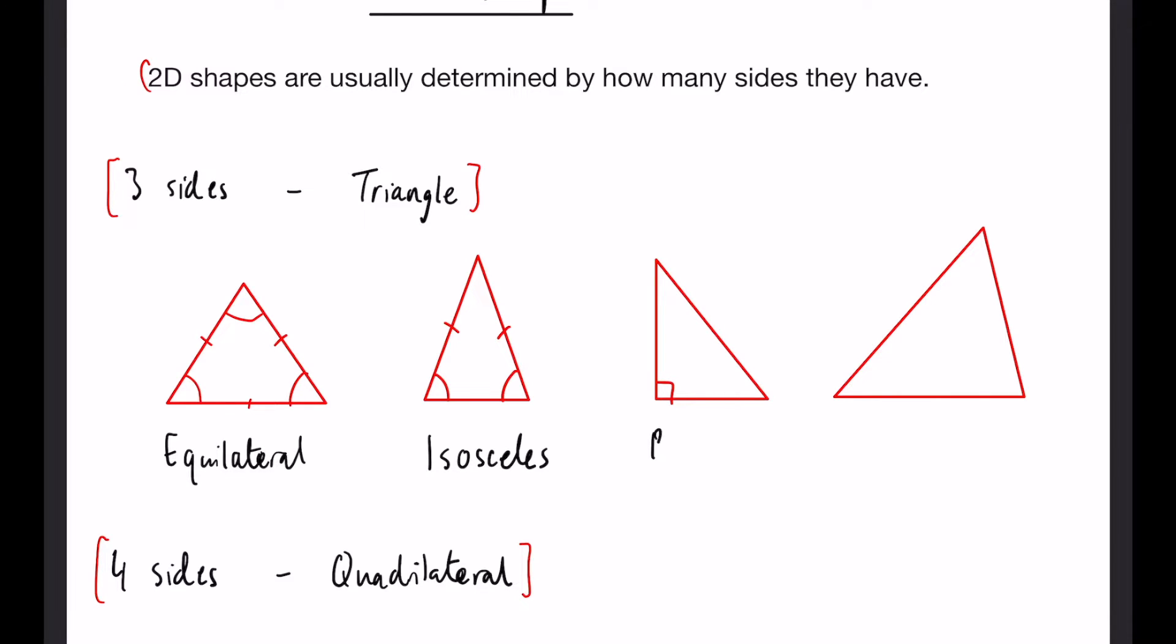Next we have a right angle triangle and you may wonder why it's called that. It's because it has a right angle in the corner.